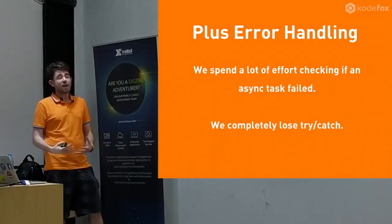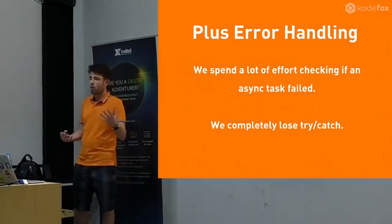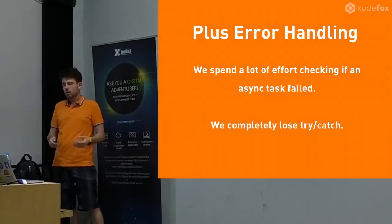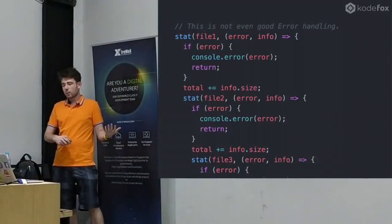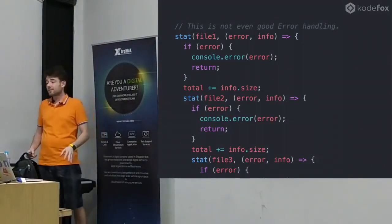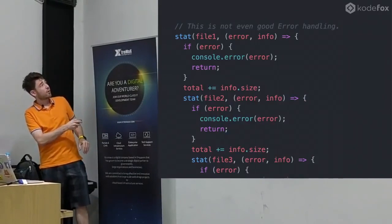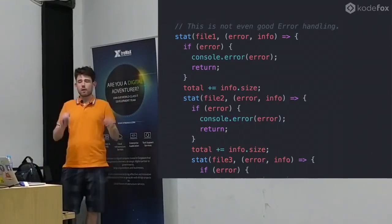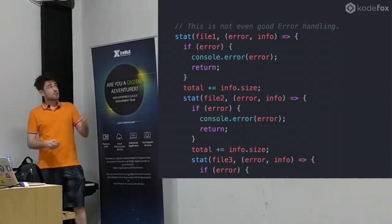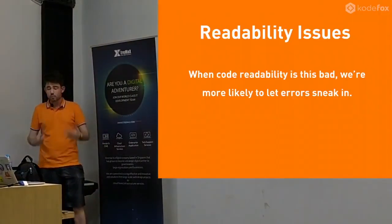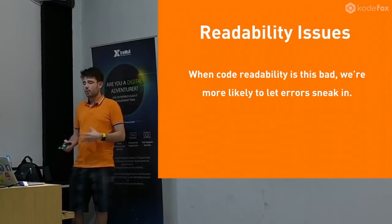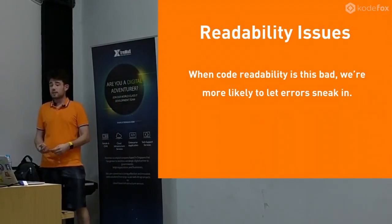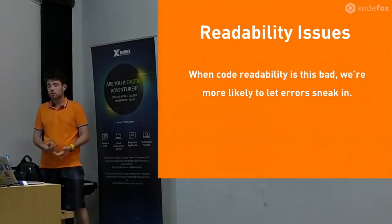There's also error handling, which we didn't even look at yet. We spend a lot of effort just checking if there's an error when we've read file one, but file two has already completed successfully. If we look at the same example with error handling, it doesn't even fit on a slide. Because now we have to - if there's an error, log it and return. That's not even good error handling, that's the minimum. We have to do it every time, so we have readability issues. Systems become difficult to maintain, difficult to read, and it's easy for bugs to sneak in.